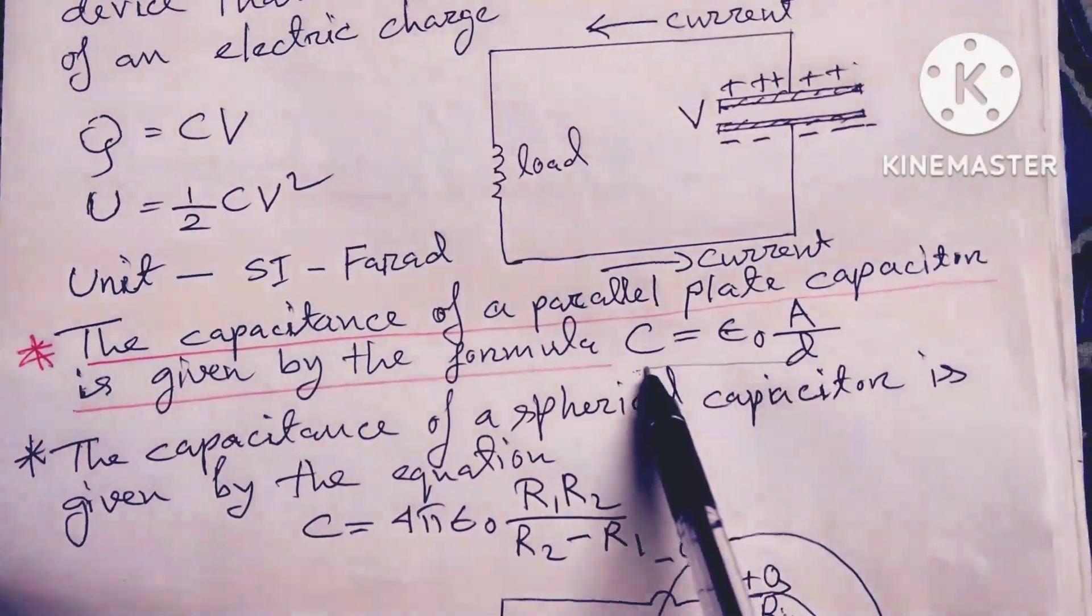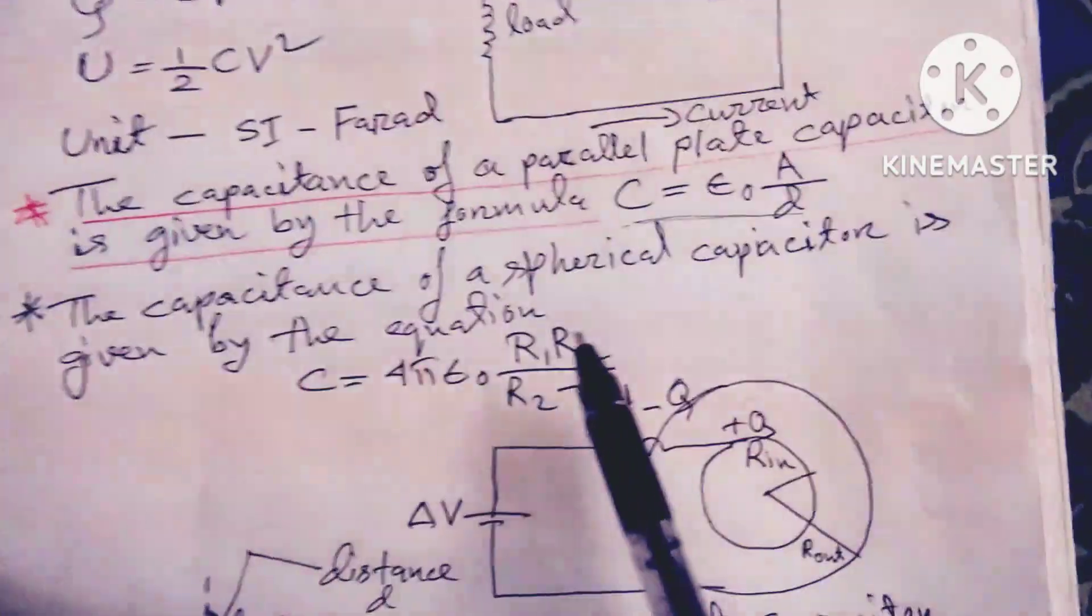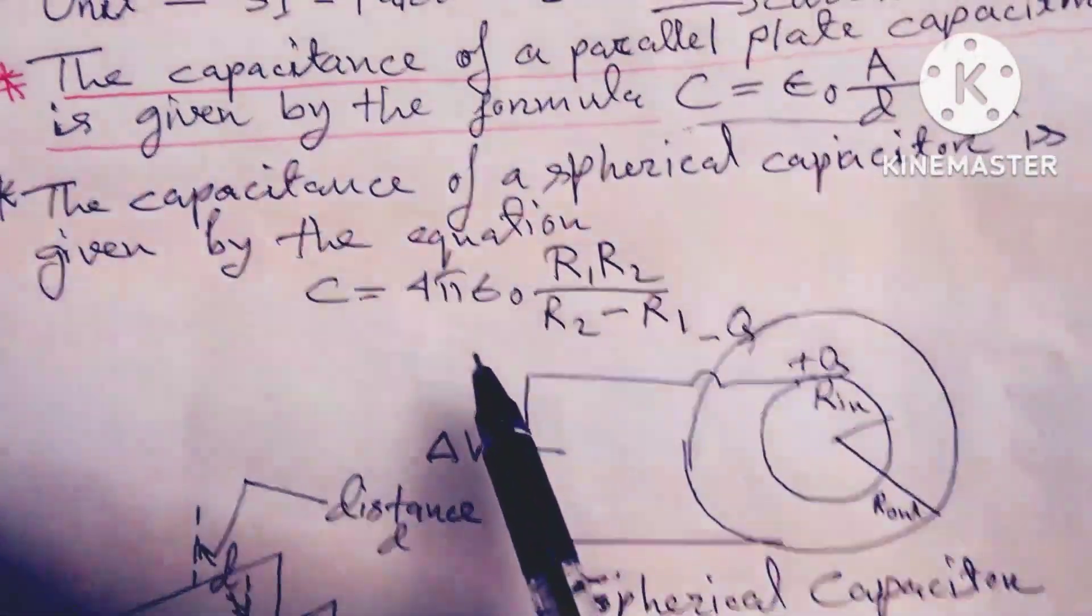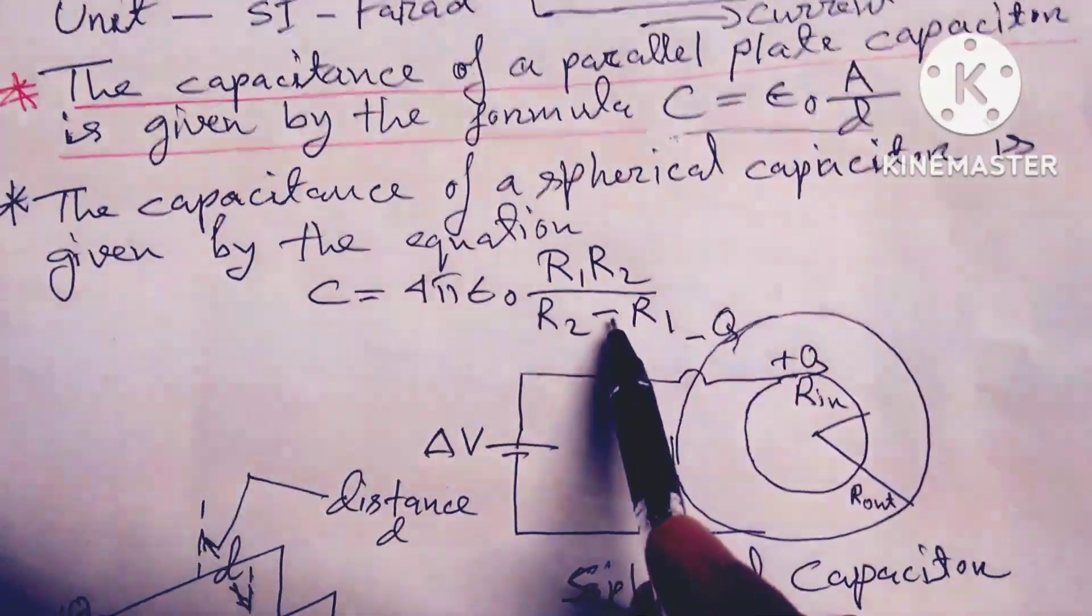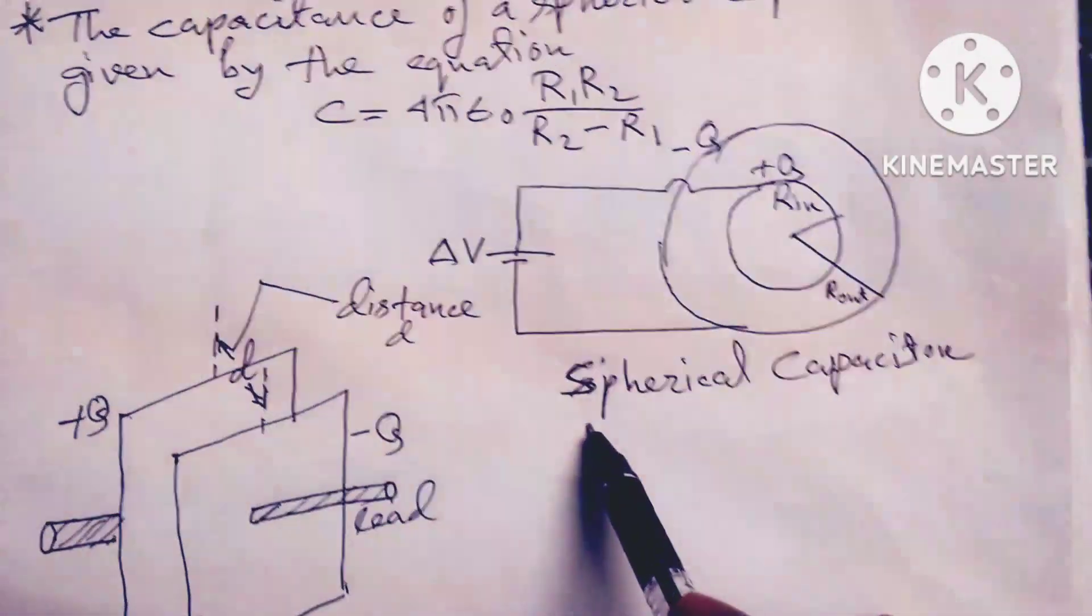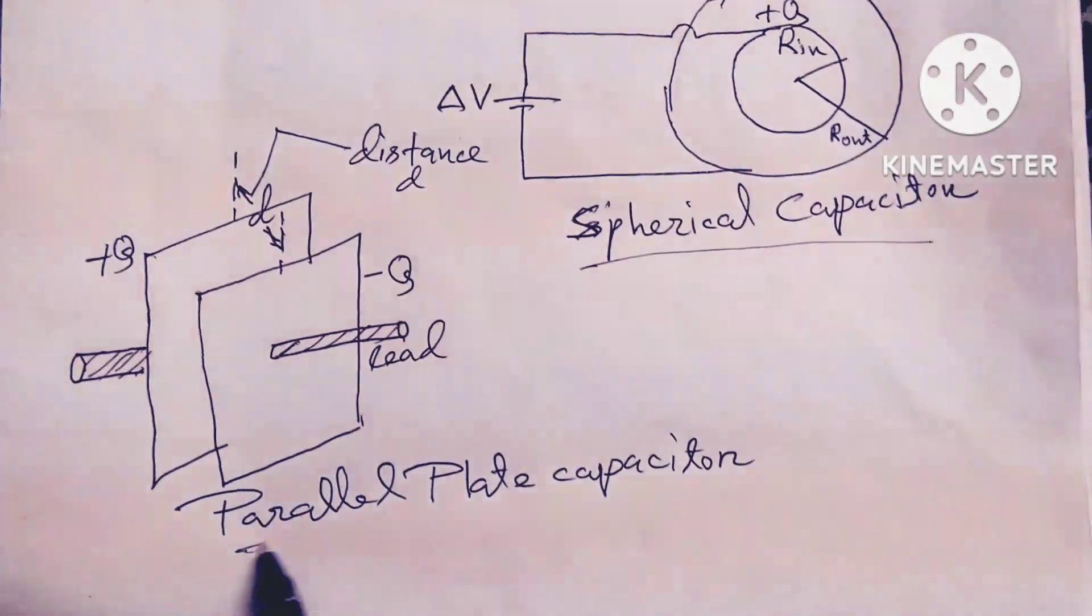The capacitance of a spherical capacitor is given by equation C = 4πε₀R₁R₂/(R₂ - R₁). This is a spherical capacitor and this is a parallel plate capacitor - these are the two diagrams.